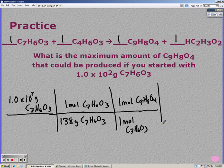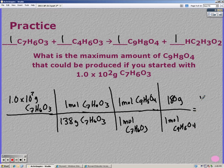1 to 1 mole ratio. And finally, 1 mole equals 180 grams for C9H8O4. So you should have gotten 130.4 grams.